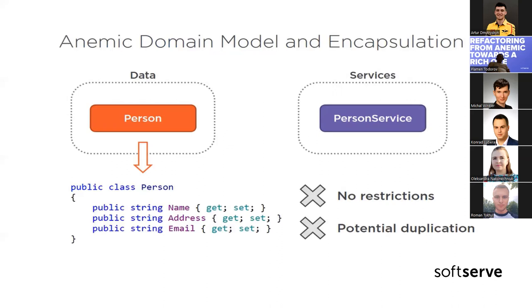Here is how a typical anemic model looks. We have some class with a few properties, and on another side we have some service that does operations on this class. But there are no specific restrictions or protection from duplicate operation logic. Anybody can start preparing a method in this service, and not in any case what is set in our class is valid — for instance, different requirements may be interconnected, and not all possible values for initializing this class are valid for our business logic.